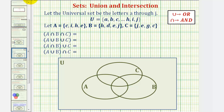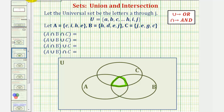Looking at the Venn diagram, we'll start with the innermost part — this region where A, B, and C overlap. The elements that are in A and B and C would be in this region. Looking at our subsets A, B, and C, notice how each of these sets contains the element E. So the element E would be in this region.